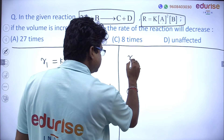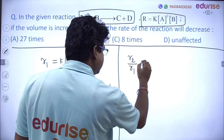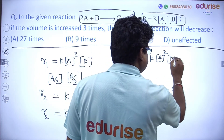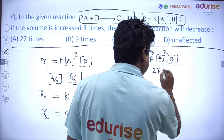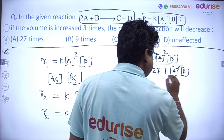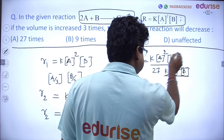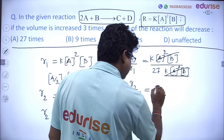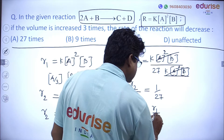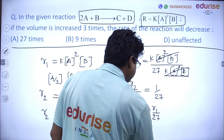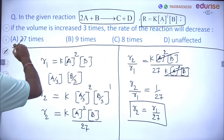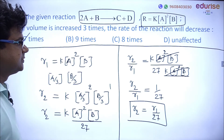So R₂/R₁ = (k[A]²[B]/27) / (k[A]²[B]). Everything cancels, giving R₂/R₁ = 1/27. Therefore R₂ = R₁/27 — the rate of reaction decreases 27 times. The answer is: decreases 27 times.